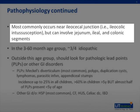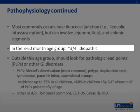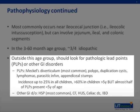Intussusception most commonly occurs near the ileocecal junction, leading to ileocolic intussusception. However, it can involve any segment of bowel. It is most commonly idiopathic among children aged 3 to 60 months, but outside of this age range, a pathological lead point or other primary gastroenterological disorder should be considered.